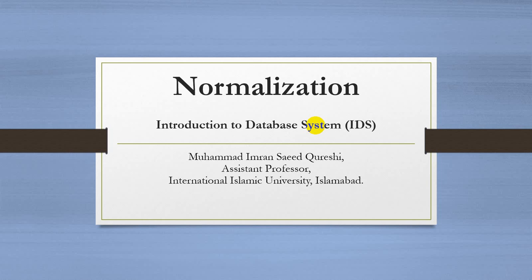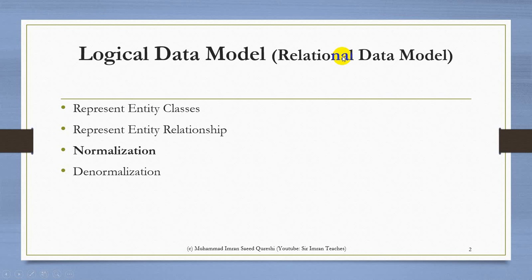Bismillahirrahmanirrahim. Dear students, Assalamualaikum. Today we are going to study normalization — a very important topic of databases. Before normalization, we performed two steps of the logical data model: first, represent entity classes, where we converted each entity class into a table; second, represent entity relationships, where we used foreign keys and new tables to relate tables with each other. Now that the tables are created with their foreign keys implemented, we will go for normalization.